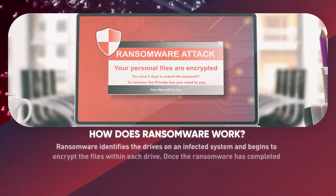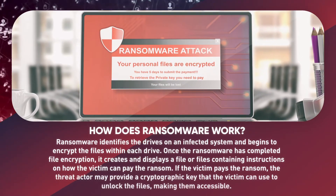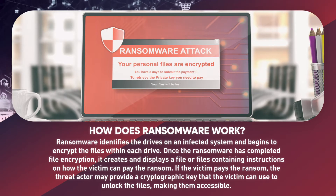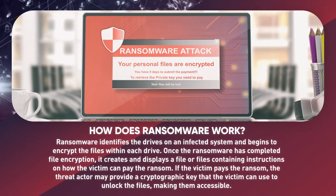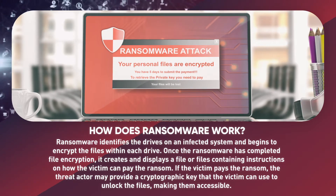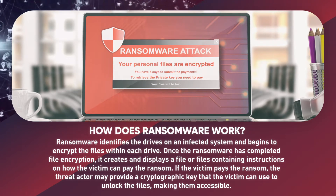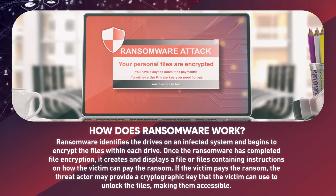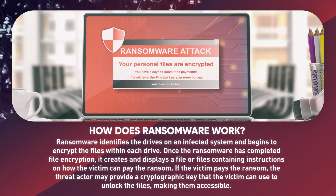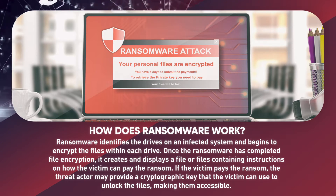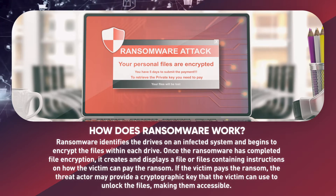How does Ransomware work? Ransomware identifies the drives on an infected system and begins to encrypt the files within each drive. Once it has completed file encryption, it creates and displays a file or files containing instructions on how the victim can pay the ransom. If the victim pays the ransom, the threat actor may provide a cryptographic key that the victim can use to unlock the files, making them accessible.